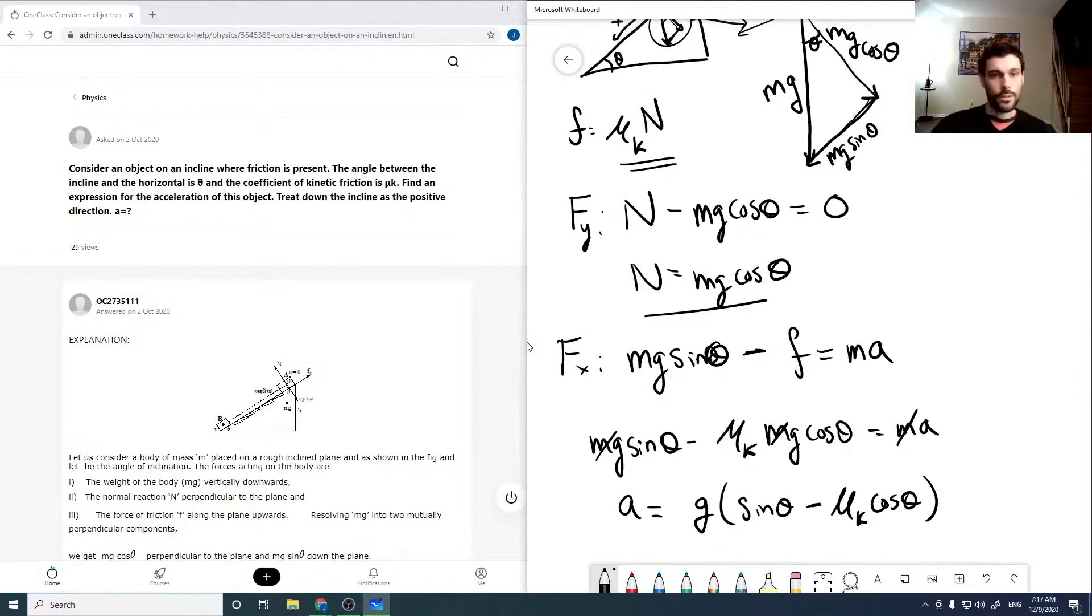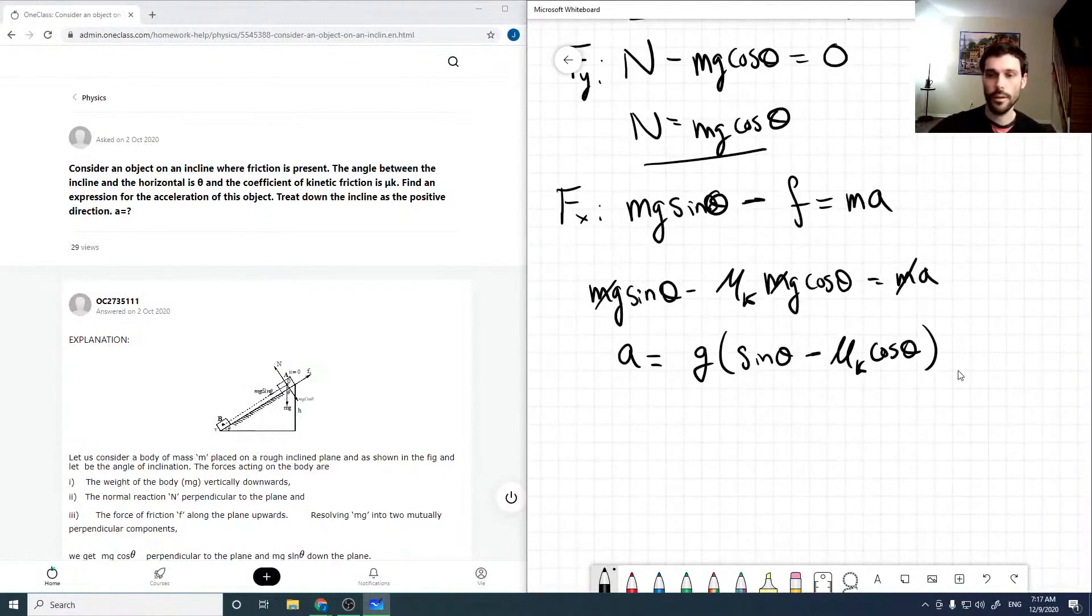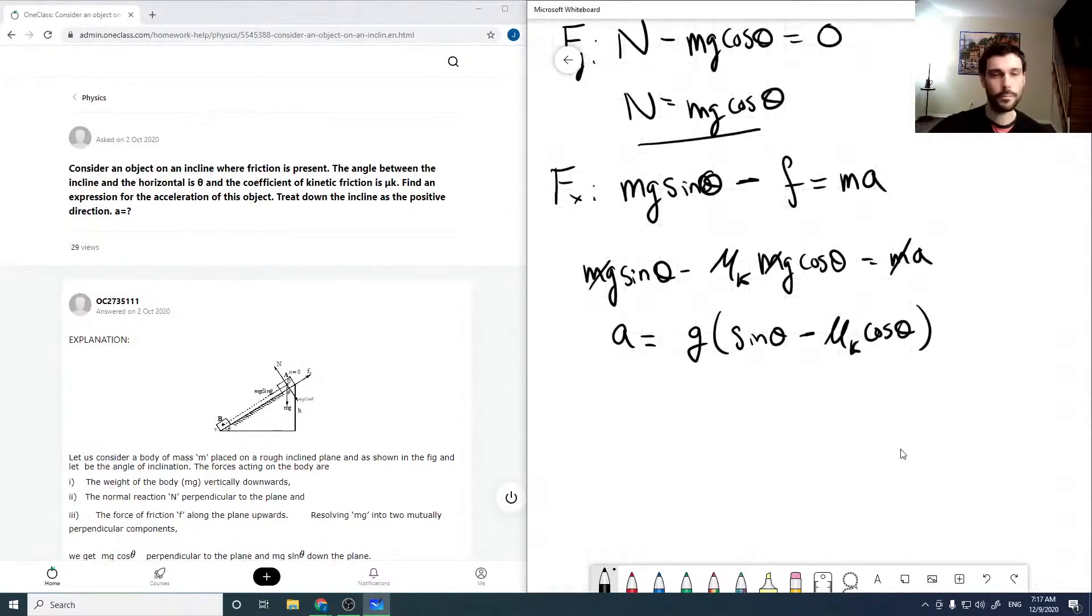And so there's our expression for the acceleration of the object. Notice it doesn't depend on mass at all. It purely just depends on the coefficient of friction and the angle of the incline, and that's it.